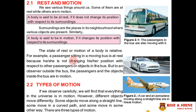Let's consider a bus example. If there is a moving bus, are the passengers at rest or in motion? This depends on the location of the observer — the person who observes. If the observer is inside the bus, the passengers appear to be at rest because they are not changing position relative to other passengers or objects in the bus. But if the observer is outside the bus, the passengers appear to be in motion.